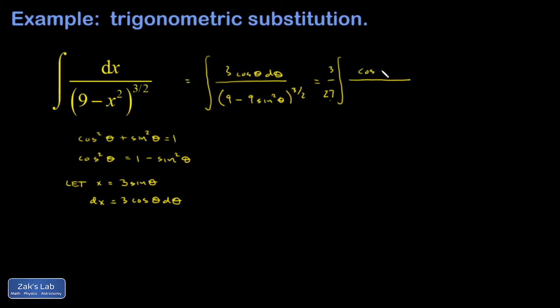So this numerator is cosine theta d theta. And then inside these parentheses, I have now 1 minus sine squared theta, which is cosine squared theta to the 3 halves.